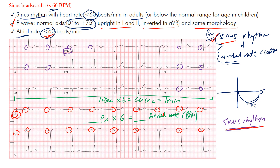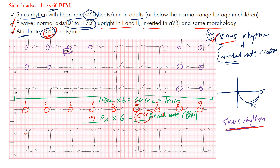Counting those circled P-waves: one, two, three, four, five, six, seven, eight, nine. Nine times six is 54 beats per minute — less than 60, so that criteria is met. Another method: count the thick lines between consecutive P-waves. Between two P-waves there are between five and six thick lines. 300 divided by five is 60, 300 divided by six is 50, so the rate is between 50 and 60 — confirming approximately 54 beats per minute.